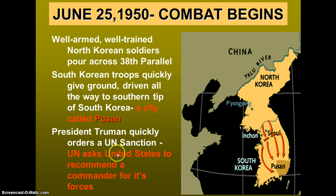President Truman quickly ordered a U.N. sanction and asked the United States to recommend a commander for its forces. Truman saw the communist invasion of South Korea as a test of the containment policy, and he ordered U.S. naval and air power forces into action, then called on the U.N. to pledge their support — meaning U.N. troops. MacArthur was obviously picked to lead as the senior commander. Truman also ordered MacArthur to send American troops from Japan to Korea to act as reinforcements, since the South Koreans were doing so badly.